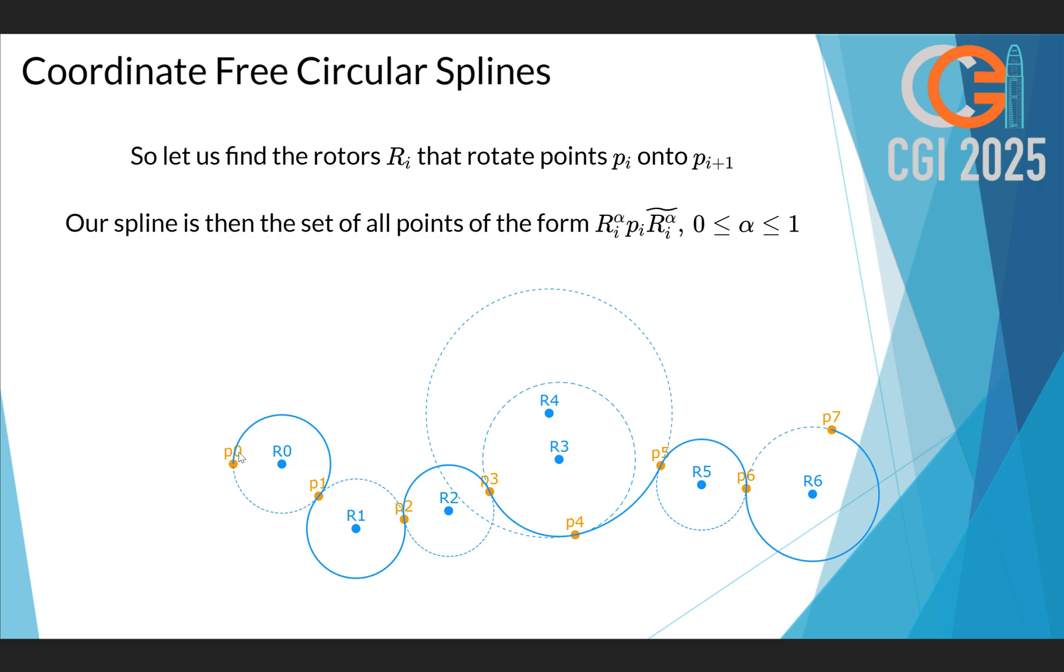Our entire spline is now going to be the set of all the points of the form, the rotor i exponentiated to the power between 0 and 1, sandwiched with the point Pi. So if you exponentiate a rotor to the power of 0, you get the identity. So first we leave point P0 in place, and then as we exponentiate our rotor, we will find all of these blue points, and then all of these, and all of these, and so on.